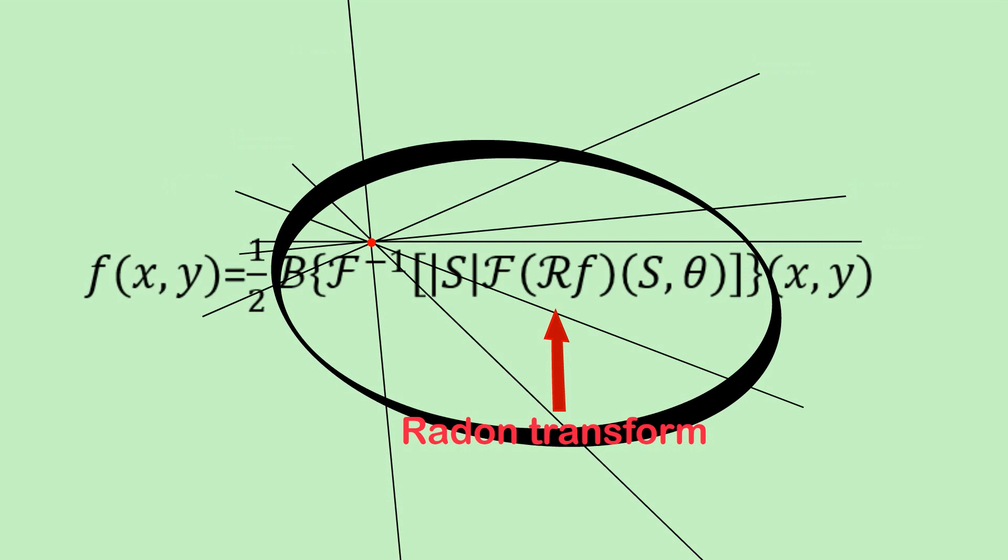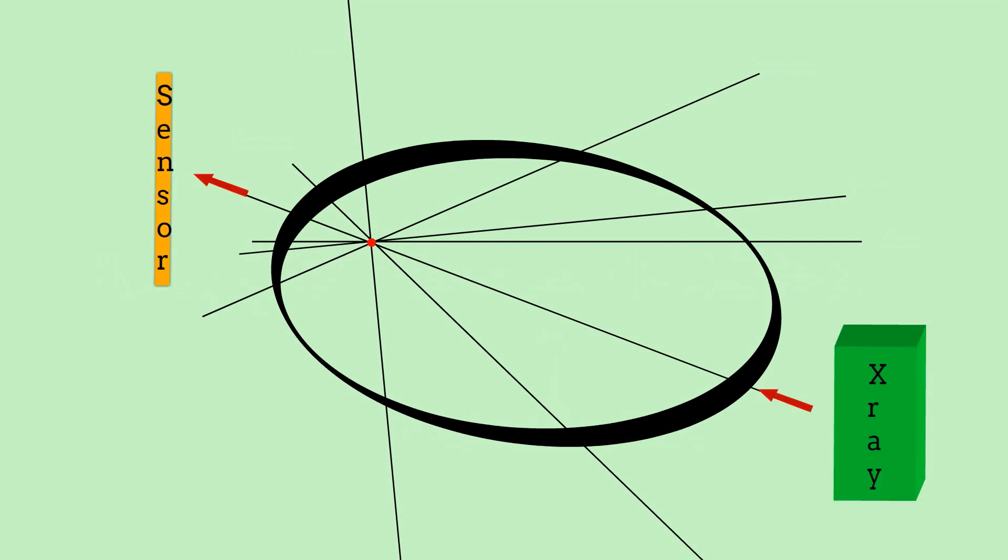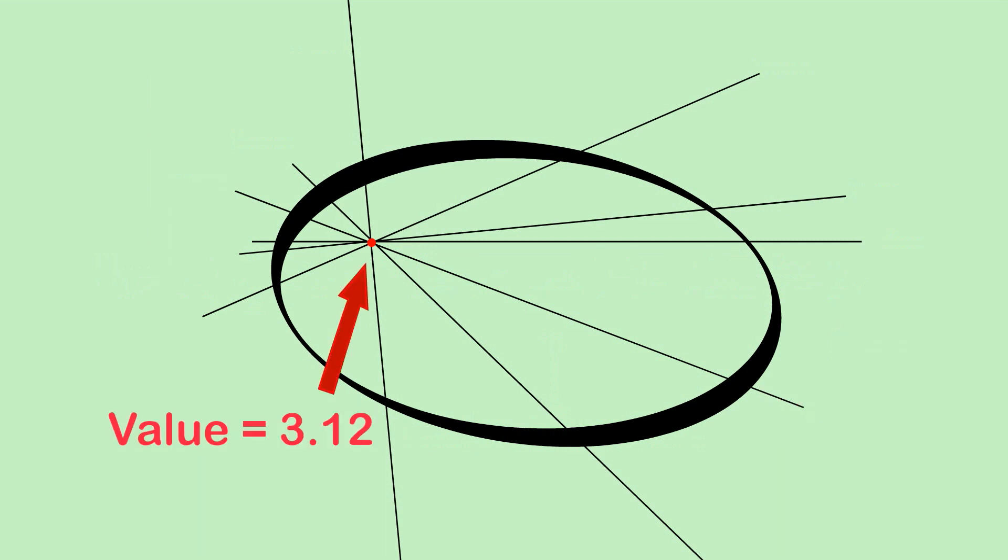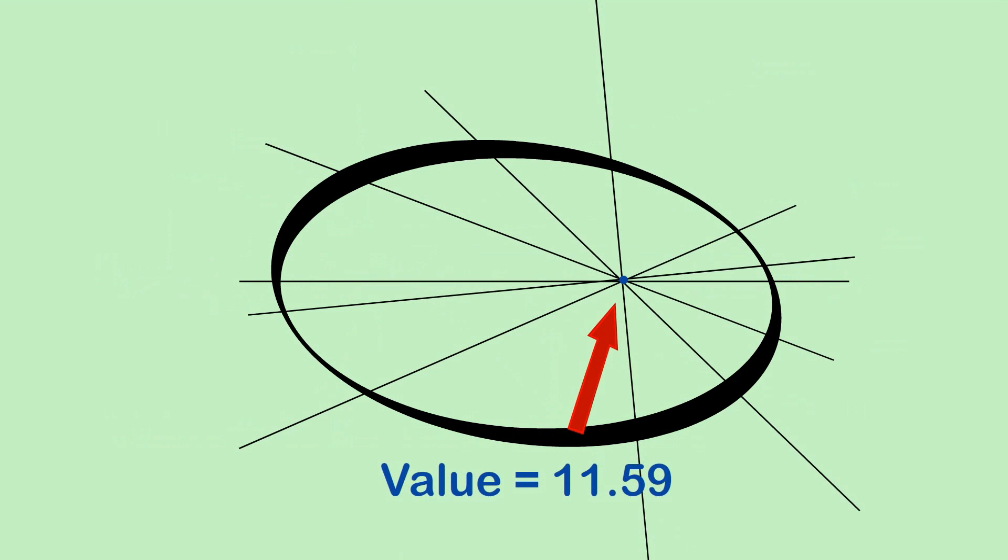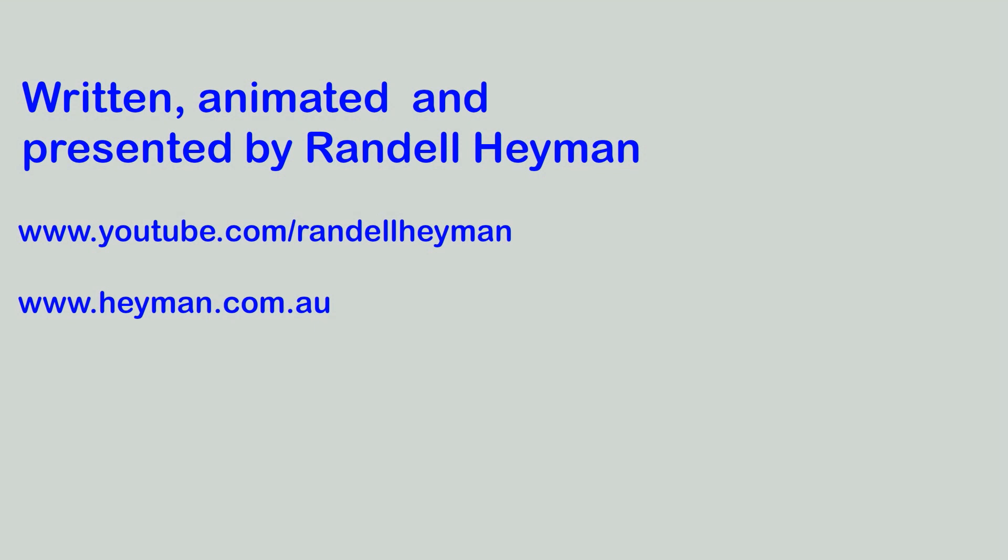This is perfectly suited to the CT problem, CT scan problem. Each of those lines can represent an X-ray going through the body, passing through this one point, the red point. And so, using Radon's genius, we can work out the value of the function or the value of the CT scan at that point. And if we can do it for that point, we can do it for every point within the boundary. So, that's how the modern day CT scan works. So, I hope that's given you a bit of an overview about CT scans and how they work.